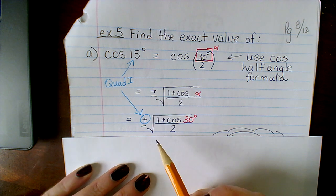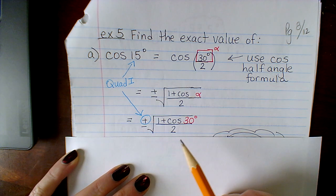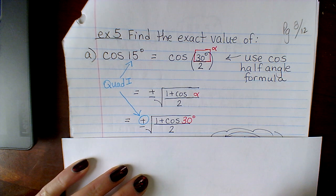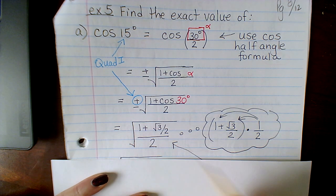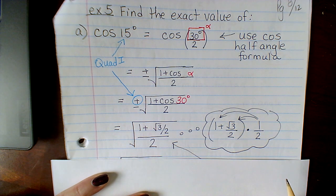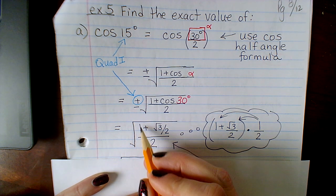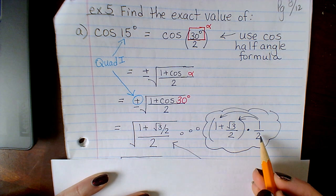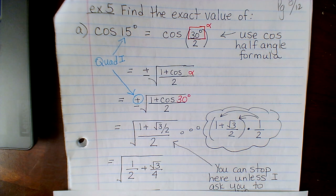Now picking which plus or minus to use, well, 15 degrees is in quadrant 1 where we know that all the trig functions are positive. So again, pay close attention to my use of color. It is very intentional here. Now the cosine of 30 degrees is root 3 over 2. So we get this that we then have to do some cleanup on. So we get 1 plus root 3 over 2 all over 2. This is the same thing as this top stuff times 1 half. This divided by 2 is the same as multiplying by 1 half. If I distribute that, I get 1 half plus root 3 over 4.